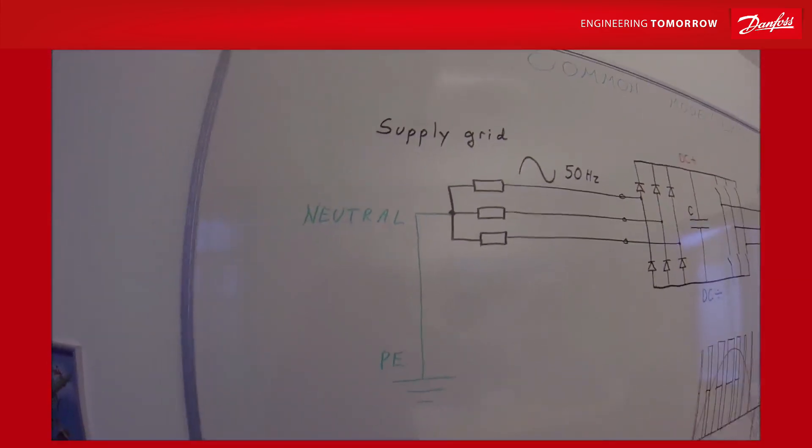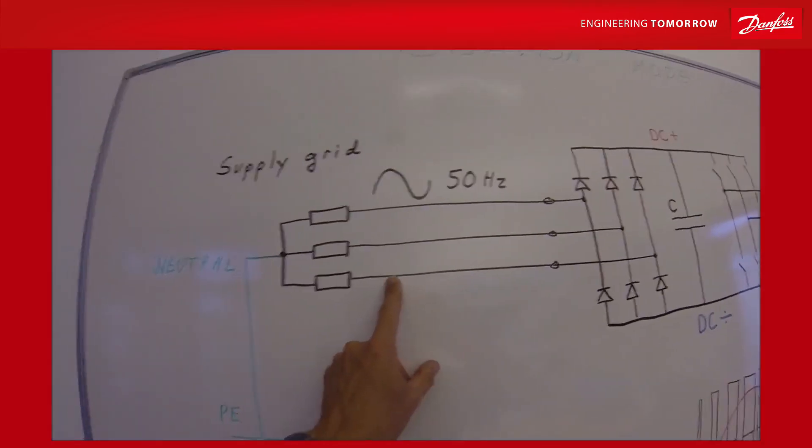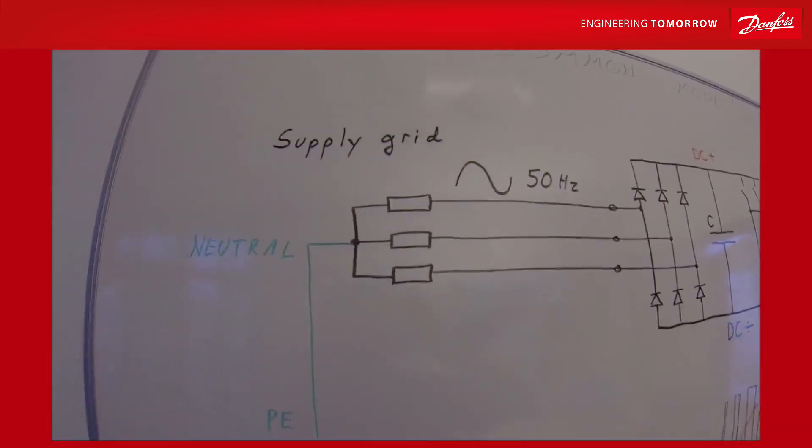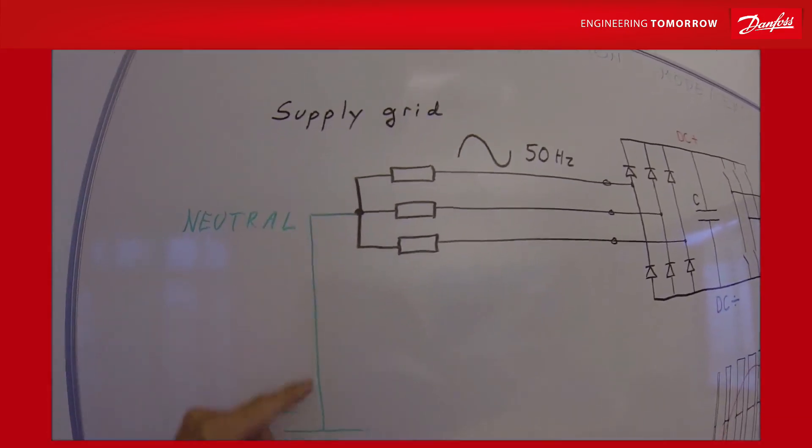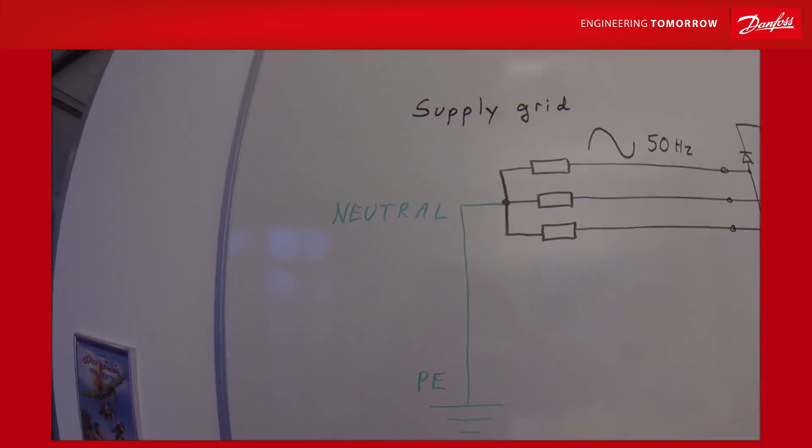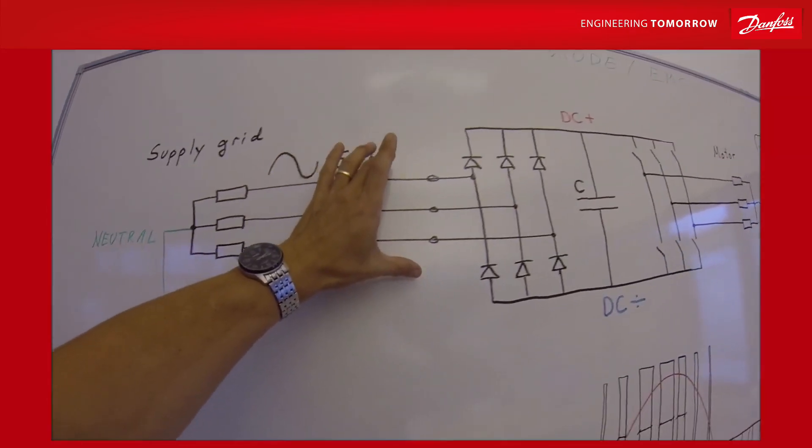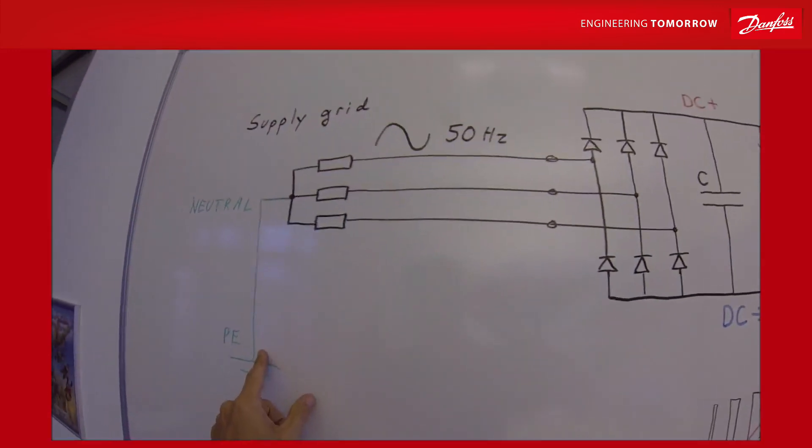The incoming supply to a frequency converter is in balance. The three phases coming in have a neutral point which is zero. So the sum of these are in total balance zero.